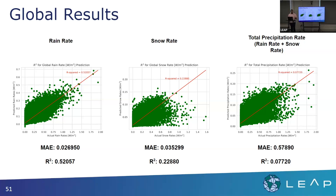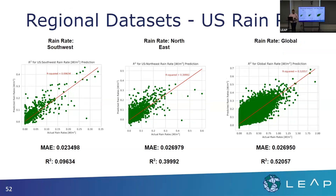I wanted to see how this compared when we shrink the region down further. I'm going over the US for this example — the northeast and southwest. On the left we have rain rate for the southwest, then rain rate for the northeast, and I also compare that to the global rain rate. I only chose rain rate for this portion because snow and total precipitation performed a lot worse in the previous slide. For the southwest, the R-squared decreases a lot. For the northeast, it's not terrible — it decreases, but compared to the global rain rate it is still lower.